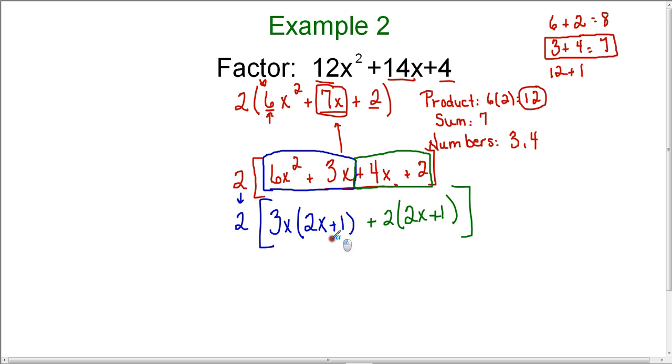Now notice that I have common factors of 2x + 1. When I factor out that 2x + 1, on this side I'm left with 3x, and here I'm left with +2.